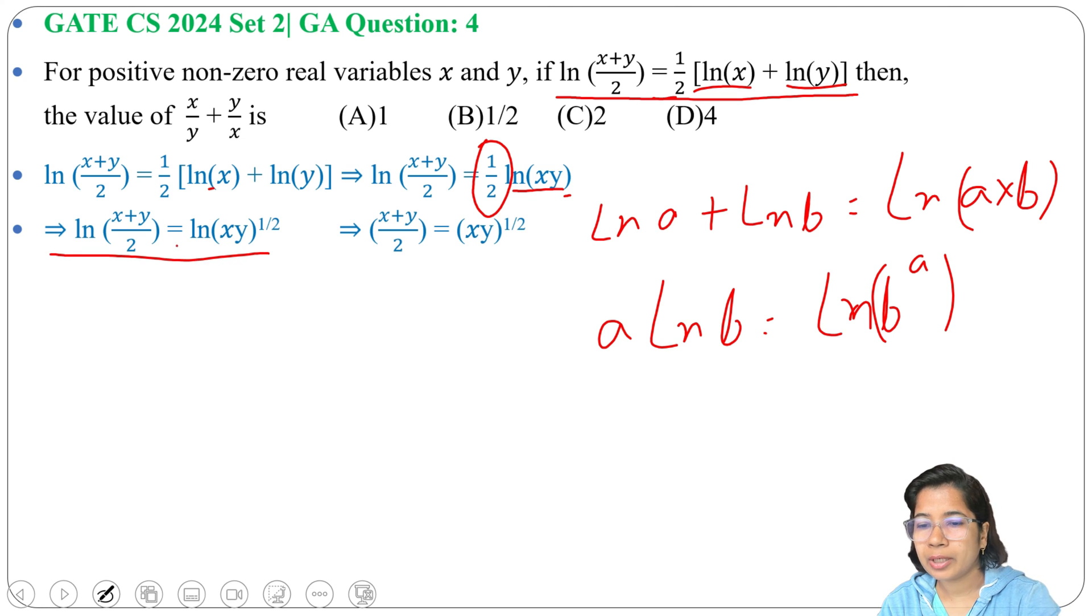From both sides we can remove the ln. After removal, we get (x+y)/2 = (xy)^(1/2).